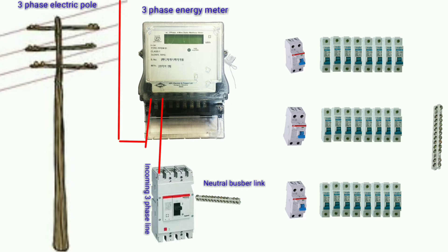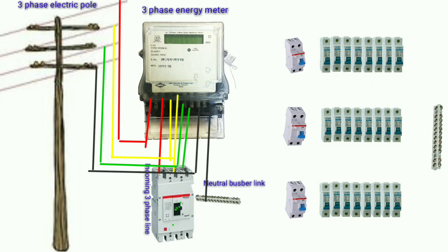Earthing link, pass connection three-phase electric pole to three-phase energy meter. Red pass, yellow pass, and blue pass connected by three-phase energy meter and main circuit breaker connected. And three-phase electric pole.